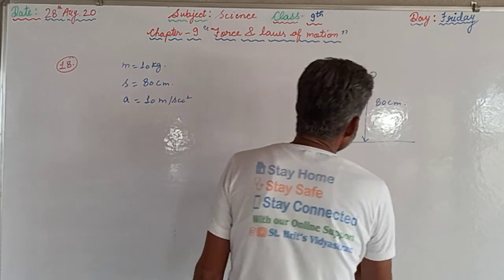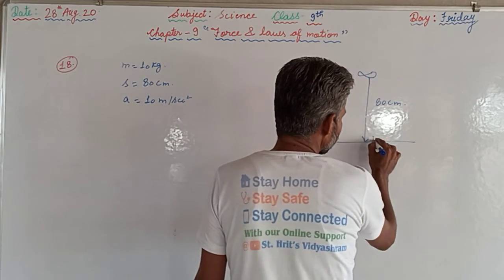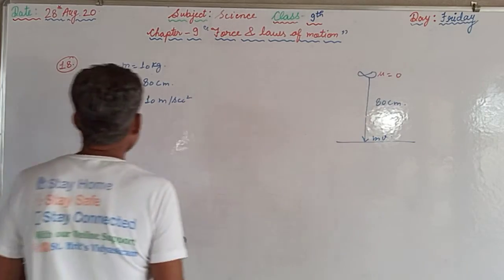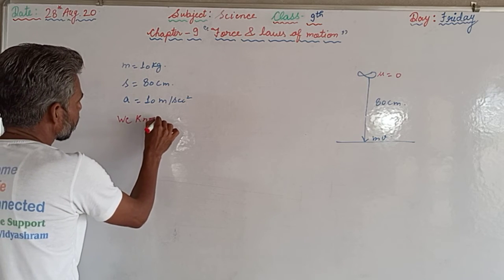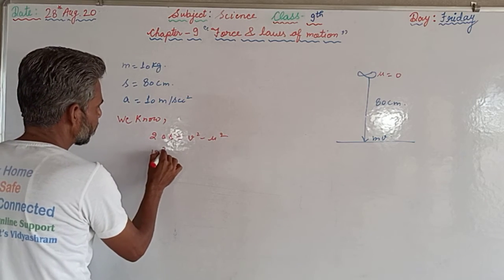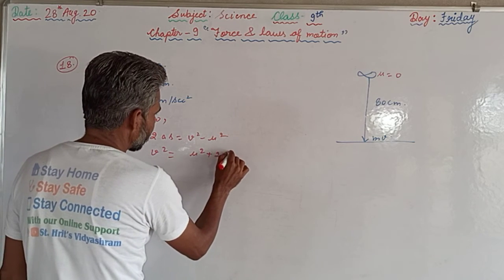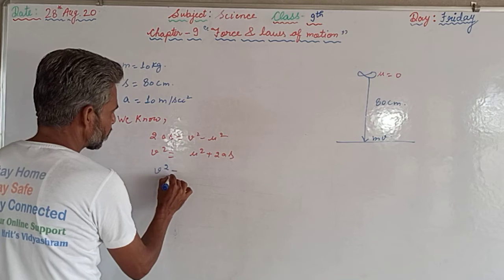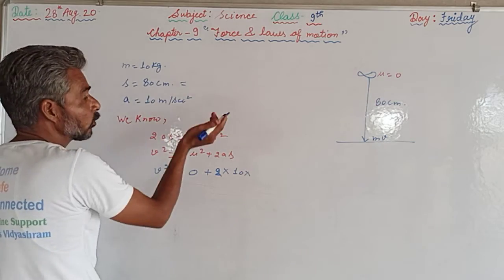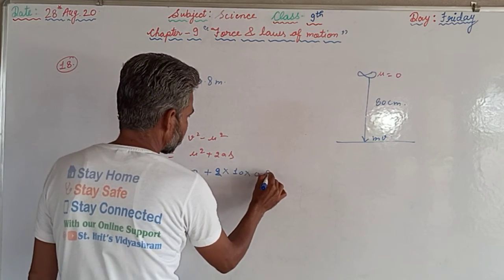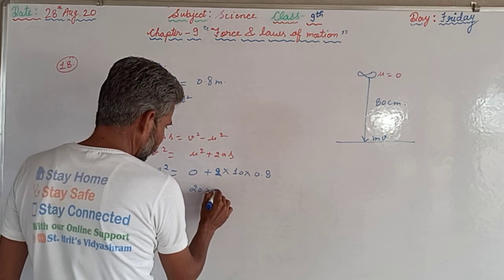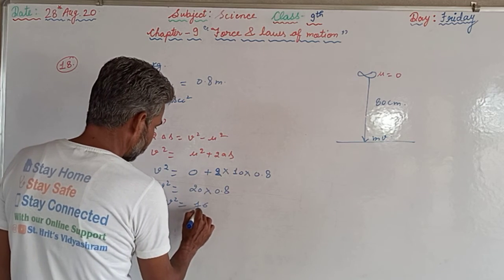The momentum transferred to the ground will be m × v. Since the dumbbell is initially at rest, u = 0. We use the third equation of motion: v² = u² + 2as. So v² = 0 + 2 × 10 × 0.8. Converting 80 cm to 0.8 meters, v² = 2 × 10 × 0.8 = 16, therefore v = 4 m/s.